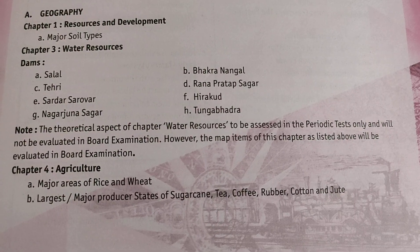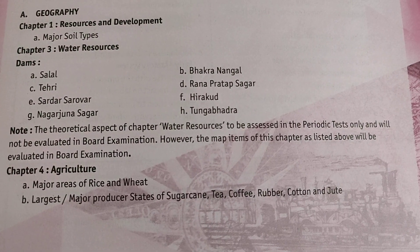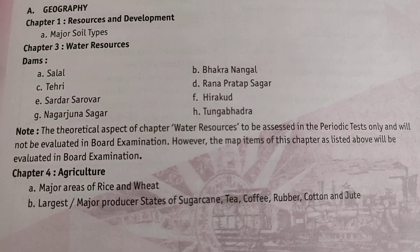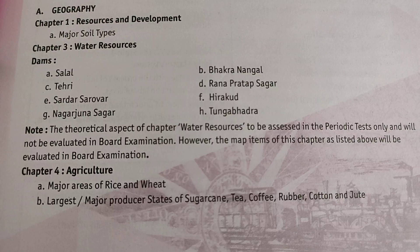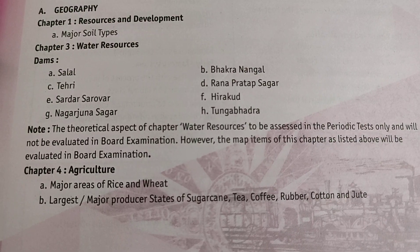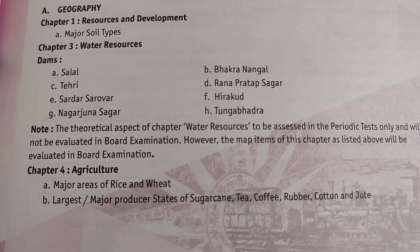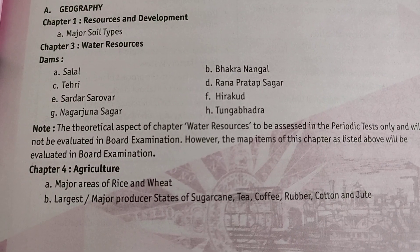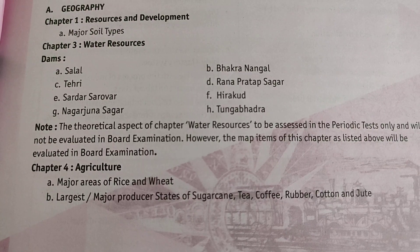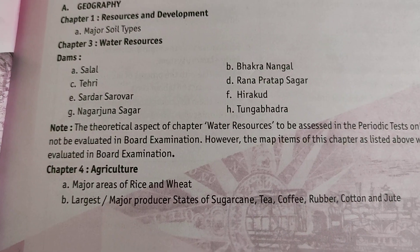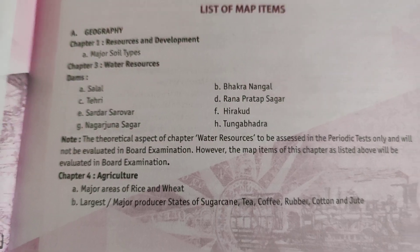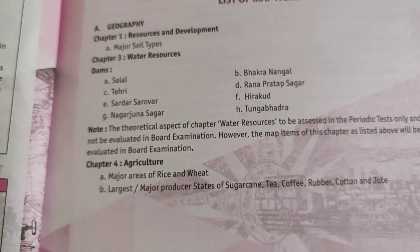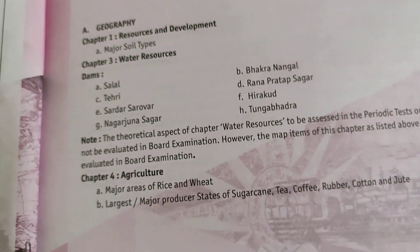From Chapter 1 you can see the major soil types. From Chapter 3 there are dams: Salal Dam, Tehri Dam, Sardar Sarovar Dam, Nagarjuna Sagar Dam, Bhakra Nangal Dam, Hirakund, and Tungabhadra. From agriculture — major areas of rice and wheat, and the major producing areas of sugarcane, tea, coffee, rubber, cotton, and jute.